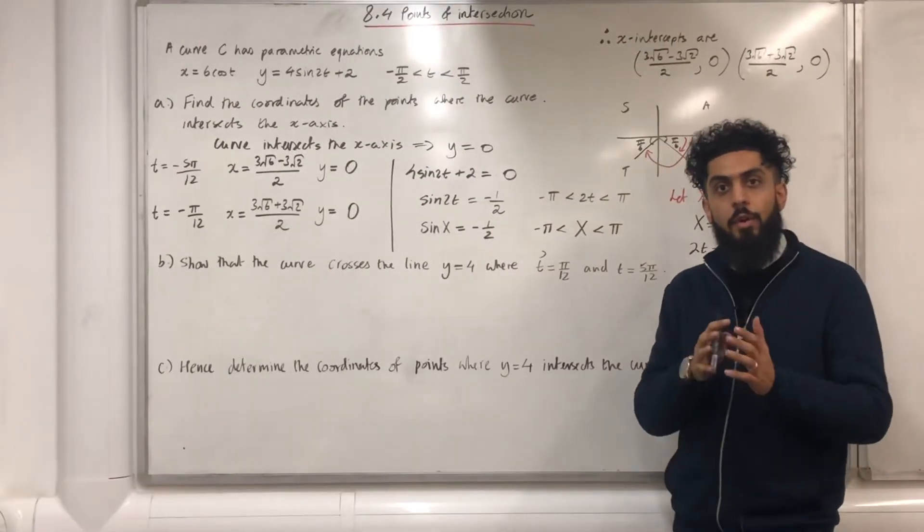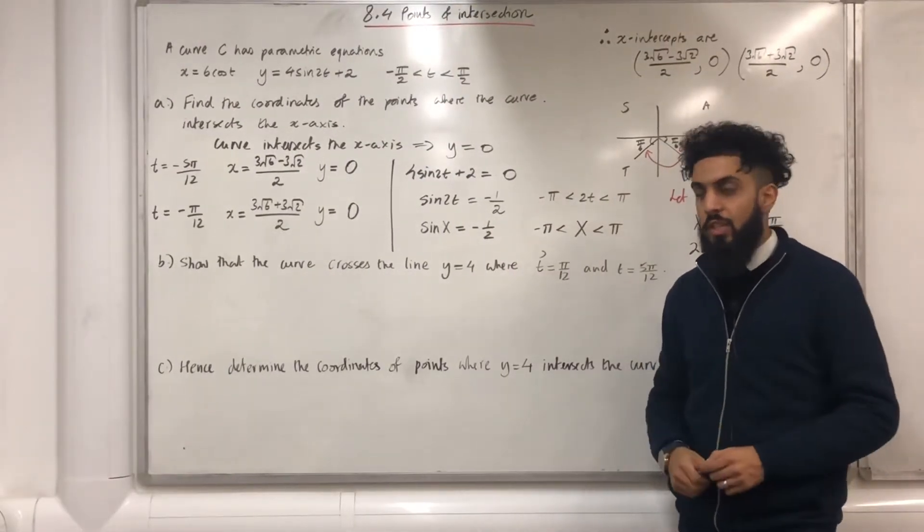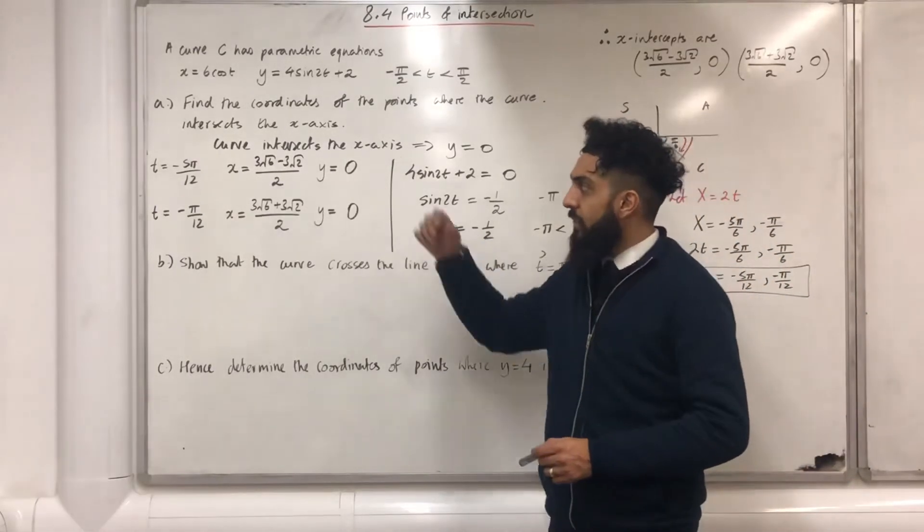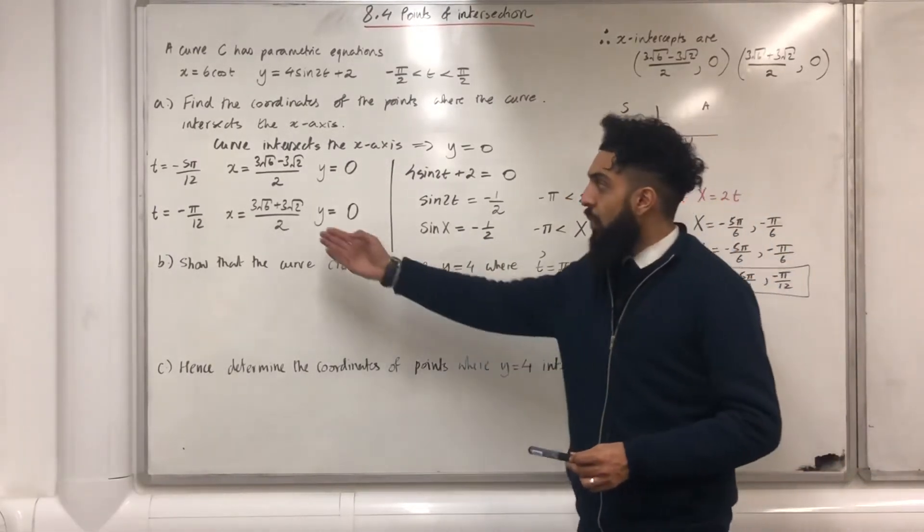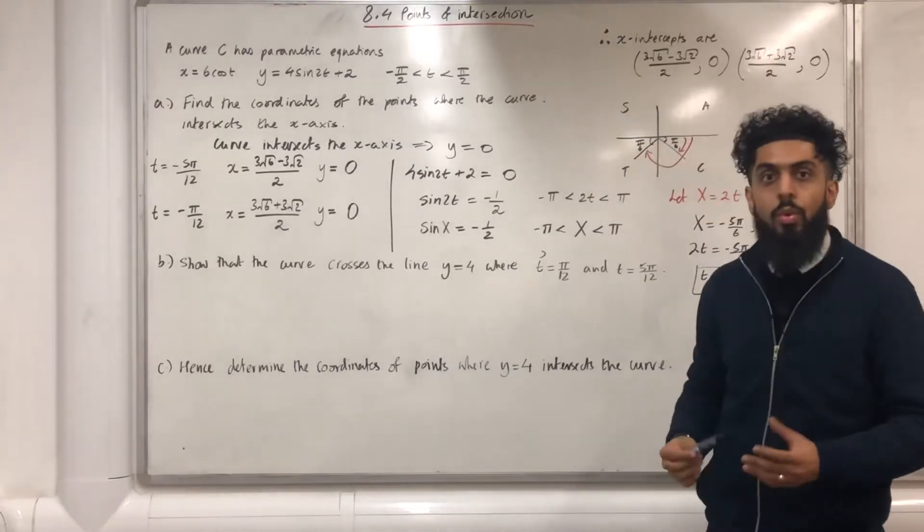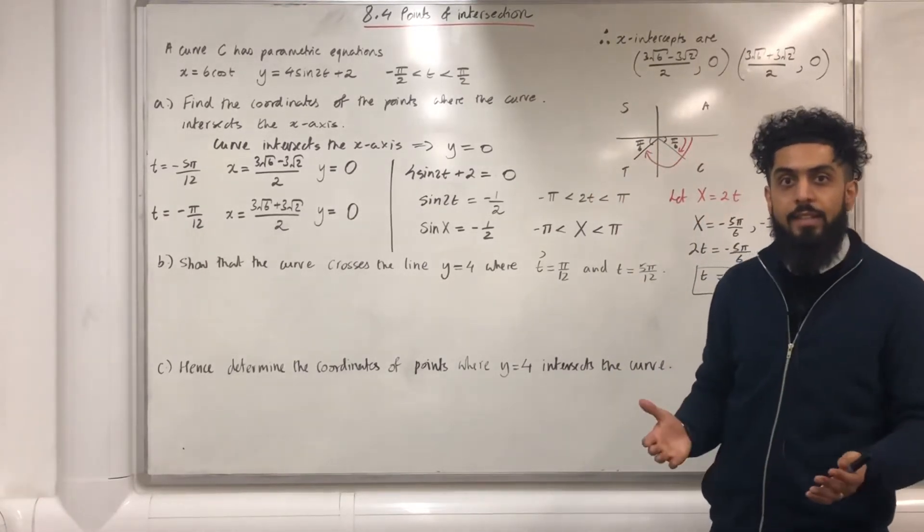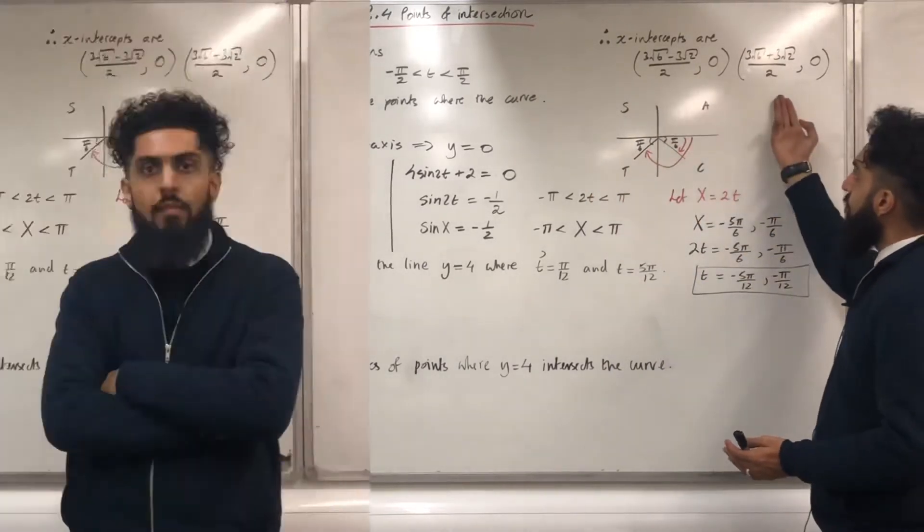After putting my t-values into the x-equation, I get x equal 3 root 6 minus 3 root 2 all over 2, and x equal 3 root 6 plus 3 root 2 all over 2. So the x-intercepts are these two over here. Now, part b.